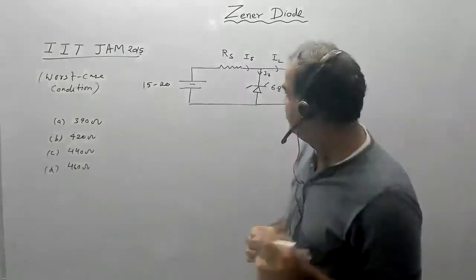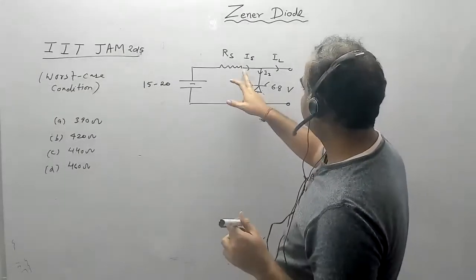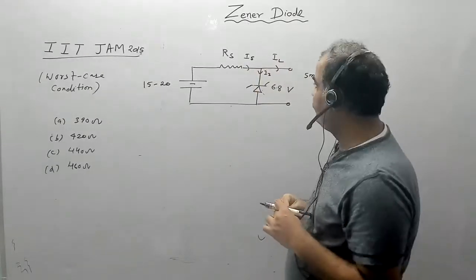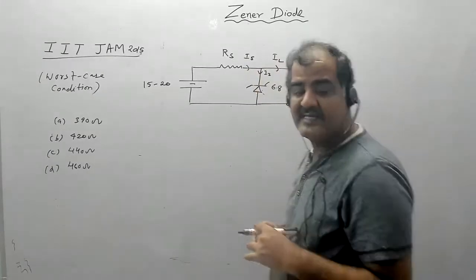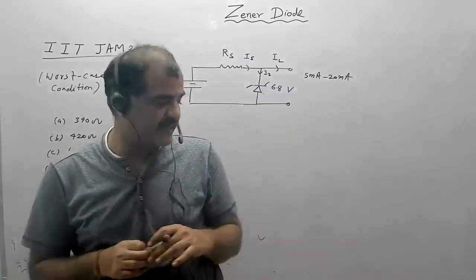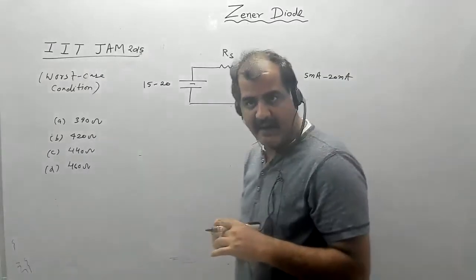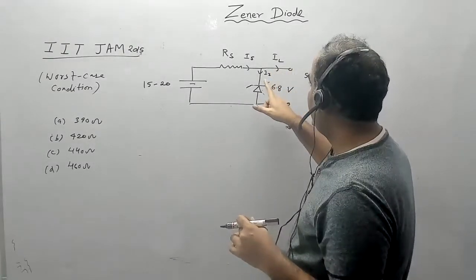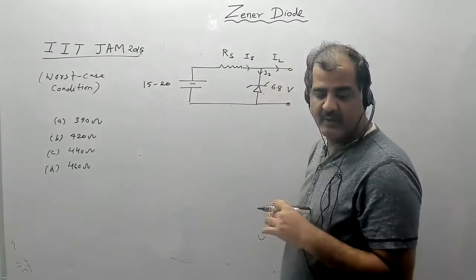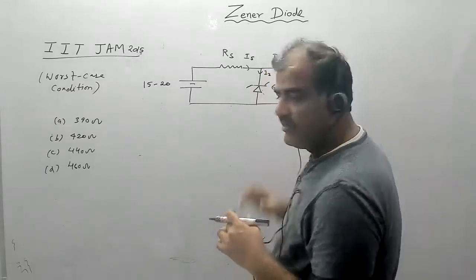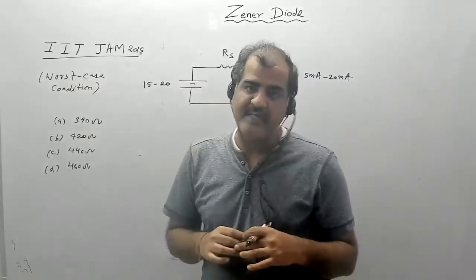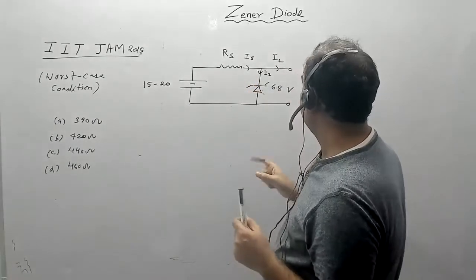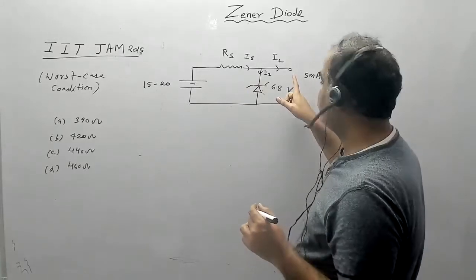To solve this question, you have to understand a couple of things. The source current is coming in and dividing between the diode current and load current. If the load resistance is less than R_L minimum, most of the current will flow through the load and there will be no current through I_z, which means the diode will come out of the breakdown region.